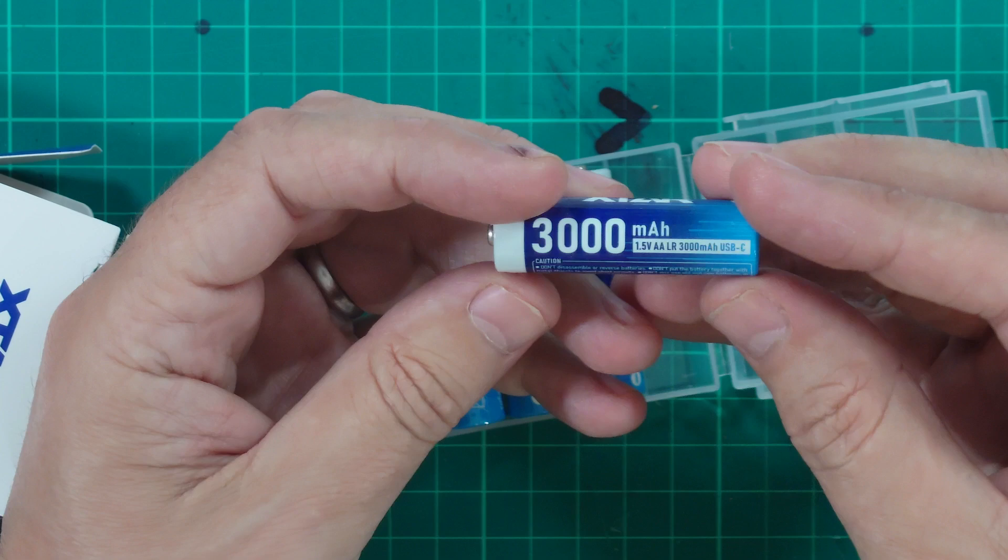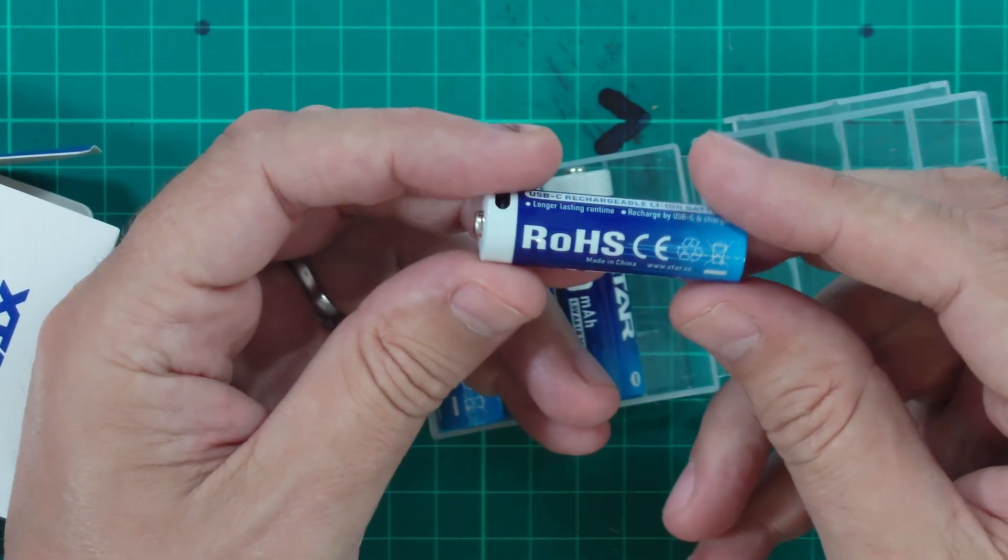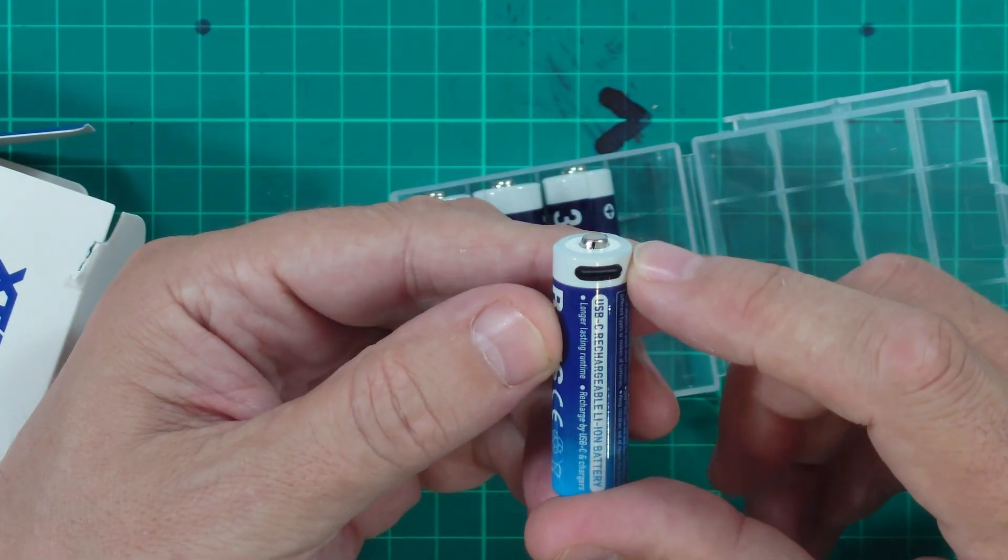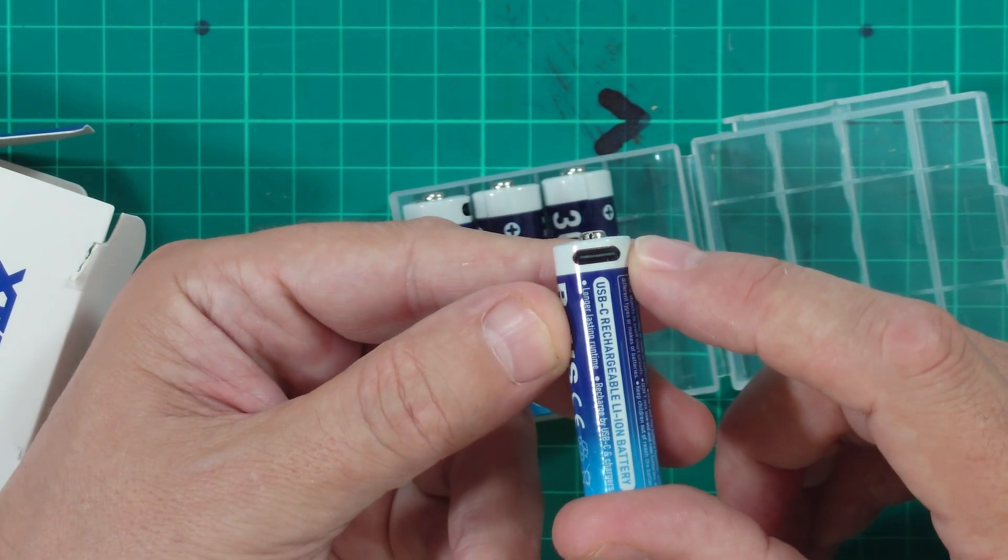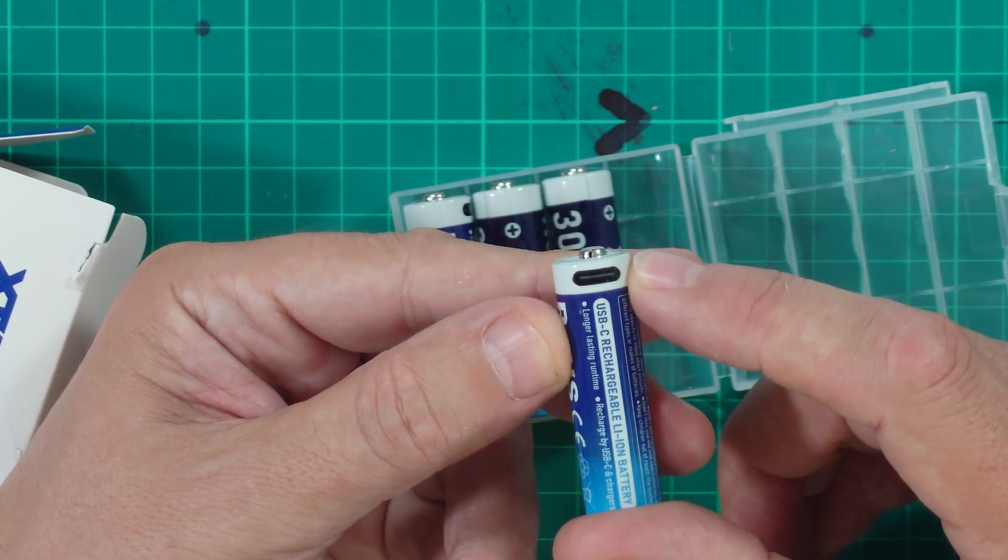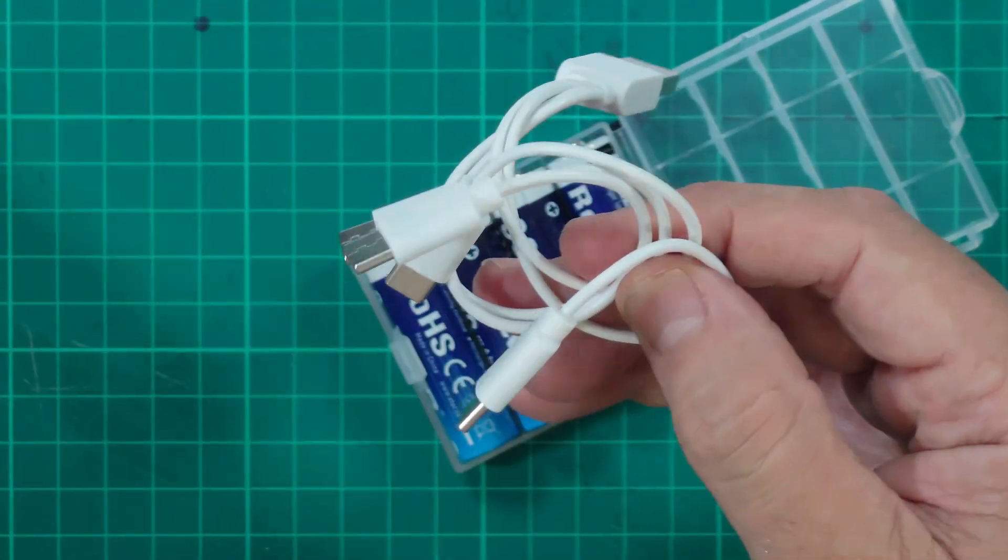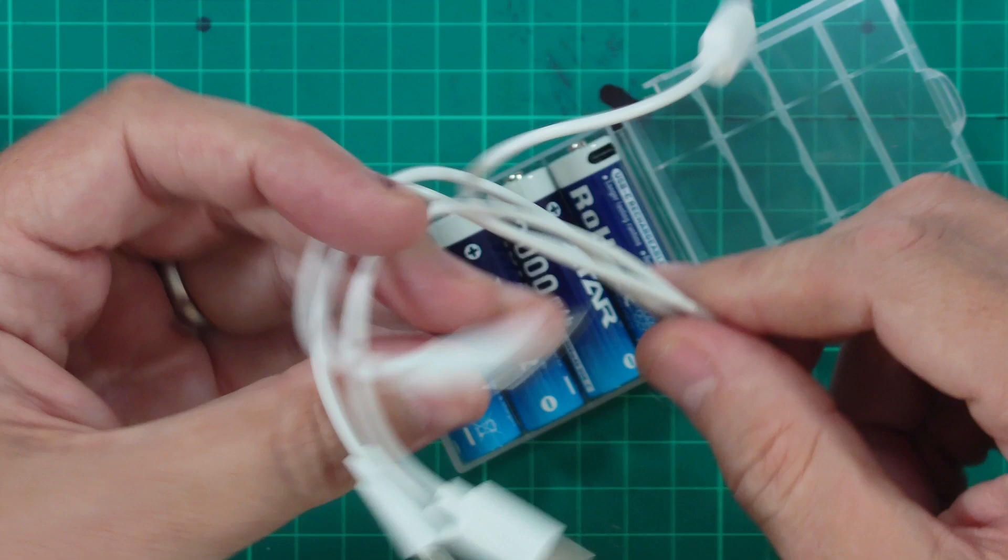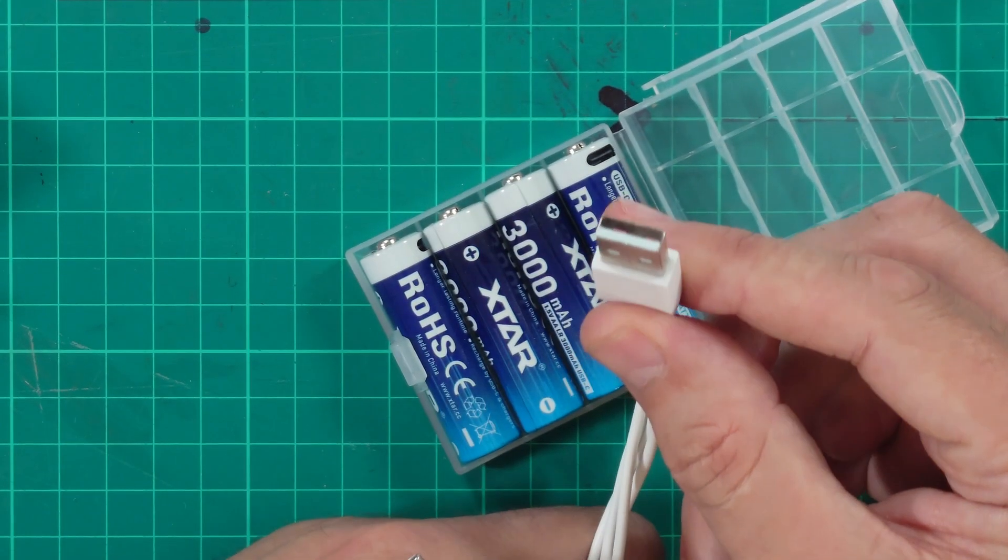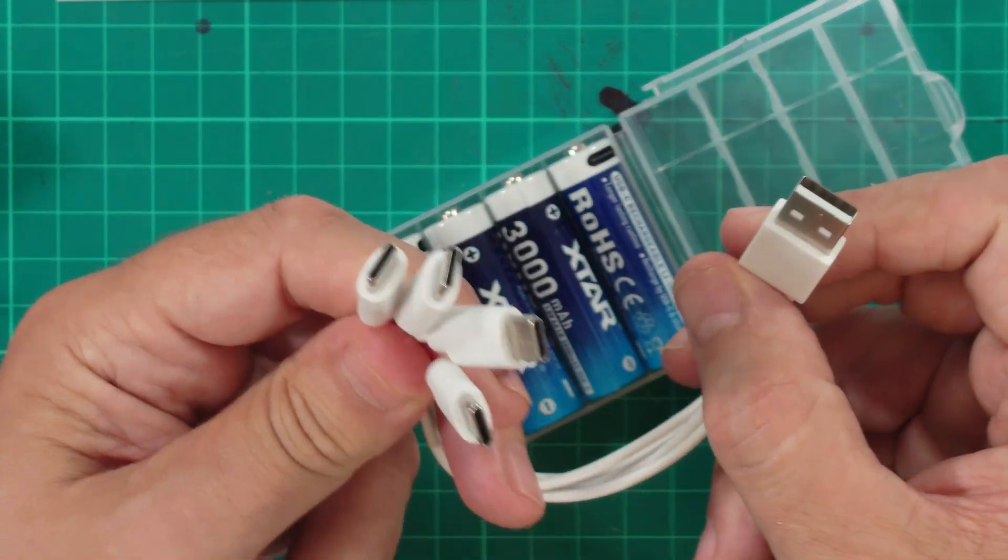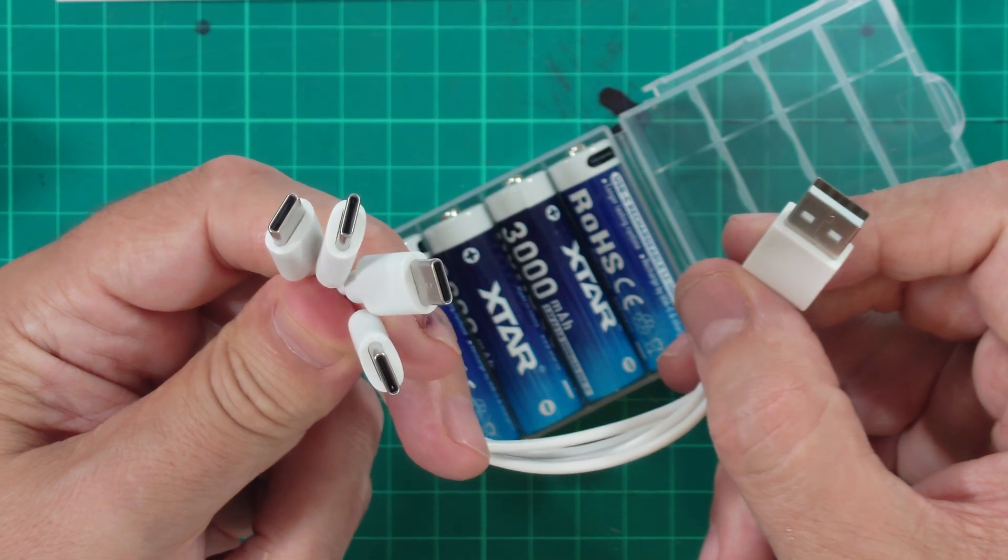Each battery is, as you'd expect, a AA-sized battery, except on the side, each battery contains a USB-C charging port. Now, helpfully, inside the box, they've also included this four-headed hydra of a charging cable, which means you've got one standard USB plug on one end and four USB-C chargers on the other.